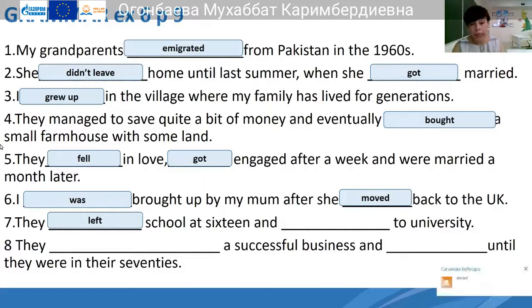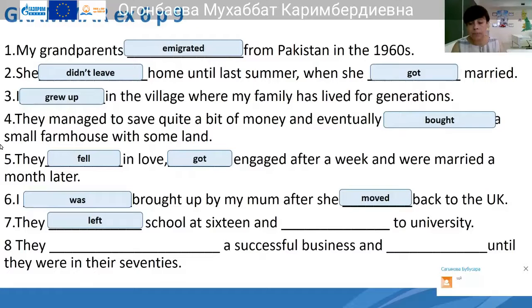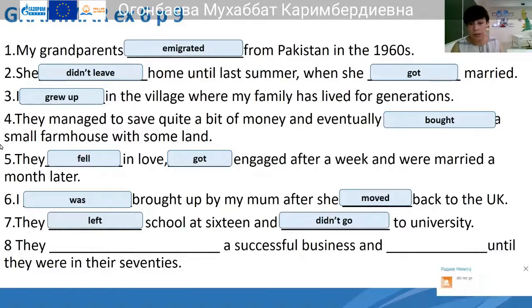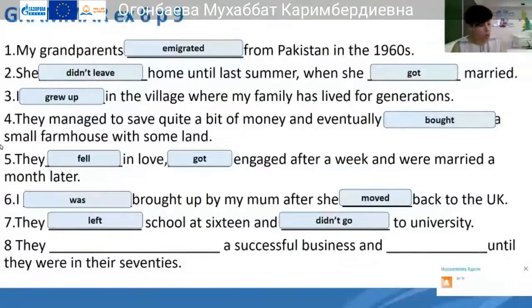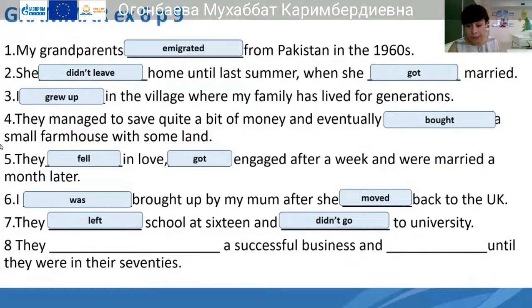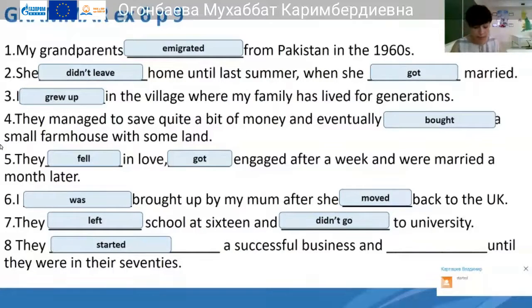They left school at 16. And they didn't go to university. It's about the parents of our hero Callum — they started a successful business and didn't retire until they were in their 70s. Very good, Bubusara. All right. The last word is 'didn't retire.' Very good, perfect. Miss Greenova, very good job, I'm very proud of you.